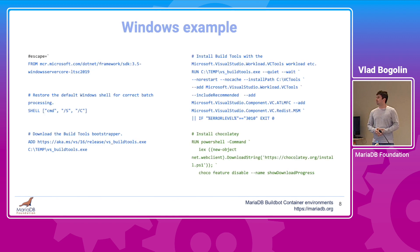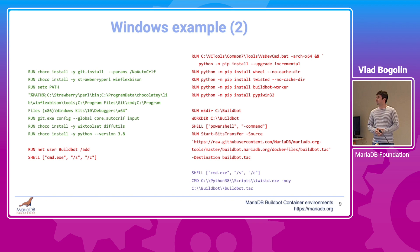Now let's look at the actual Windows Dockerfile. As it can be seen, we follow the same structure. We first select the desired base image, then we install the Visual Studio build tools. Next, we install Chocolatey to facilitate the build dependency installation. The process continues by installing the MariaDB build dependencies and then the required buildbot-related packages, similar to the Linux setup. Finally, we fetch the same buildbot configuration file and ensure that the buildbot worker runs on startup.